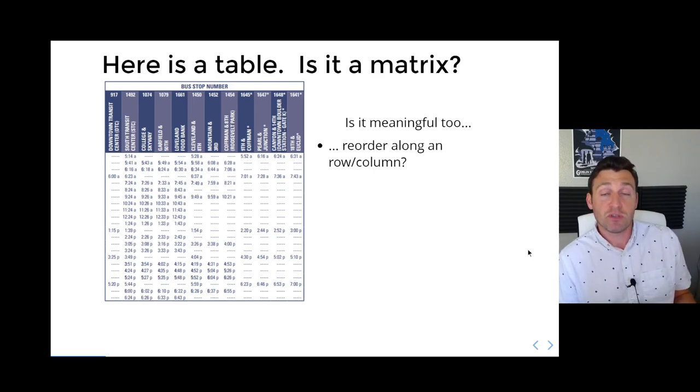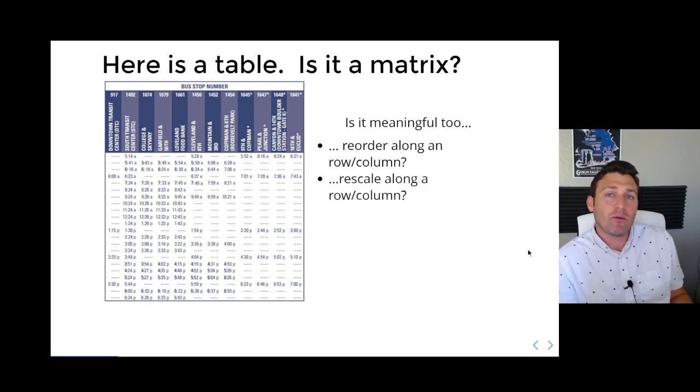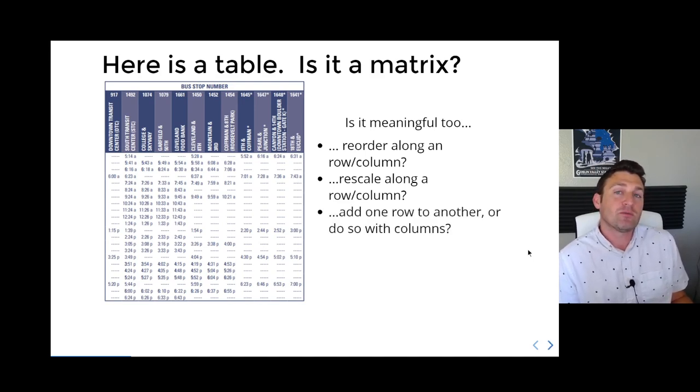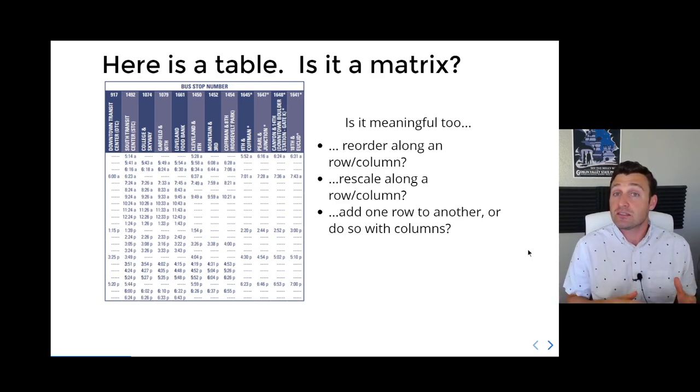What value is it to put this out of order? The stops come in a specific order—to ruin that order would make the person confused. To change the times would also be difficult to scan. It doesn't seem to add any value to reorder. What about rescaling? We rescale rows and columns of a matrix when doing Gaussian elimination, but rescaling would certainly lead to mostly nonsense.